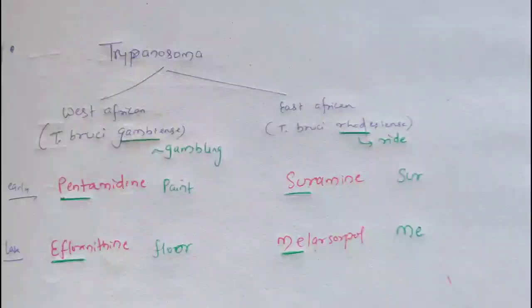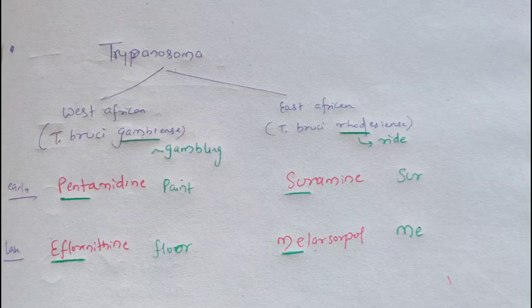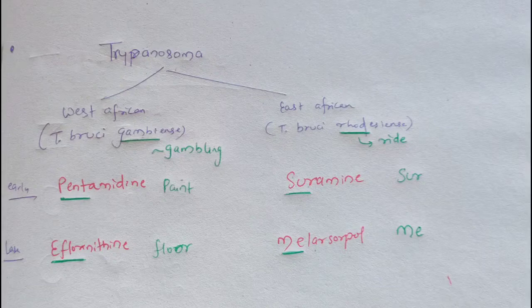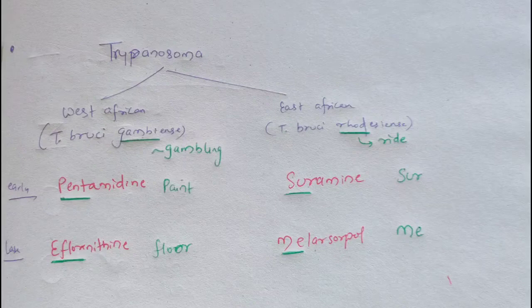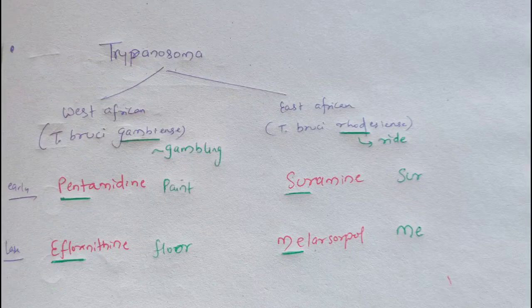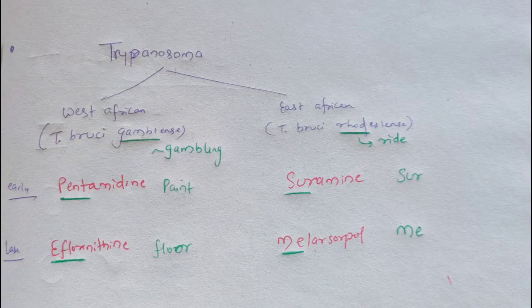Hello everyone, this is a small trick to remember the drugs for different stages of trypanosoma infection. Trypanosoma causes sleeping sickness, and there are two species: Trypanosoma brucei gambiense and Trypanosoma brucei rhodesiense. Trypanosoma brucei gambiense causes West African sleeping sickness, and Trypanosoma brucei rhodesiense causes East African sleeping sickness.